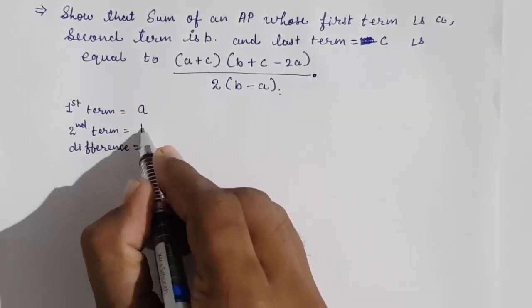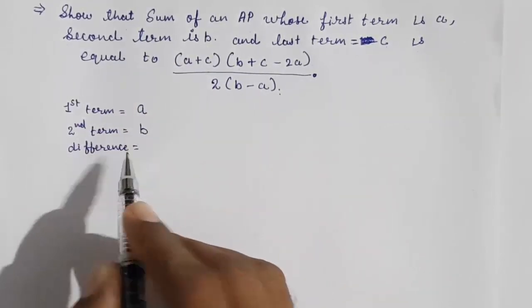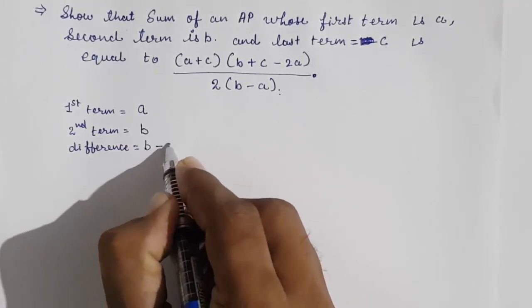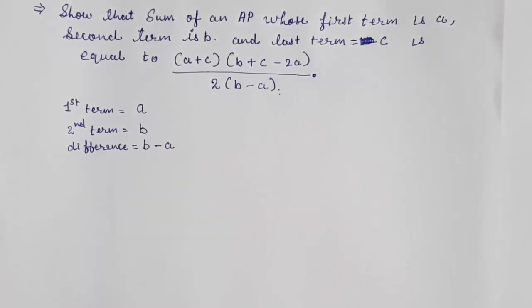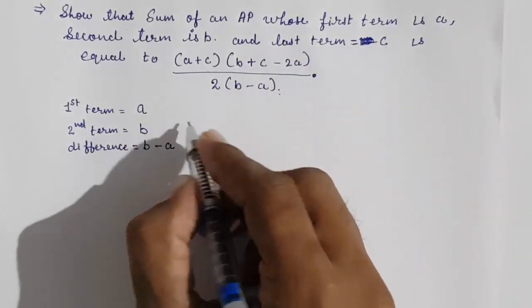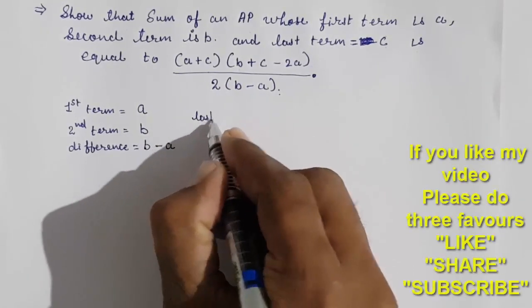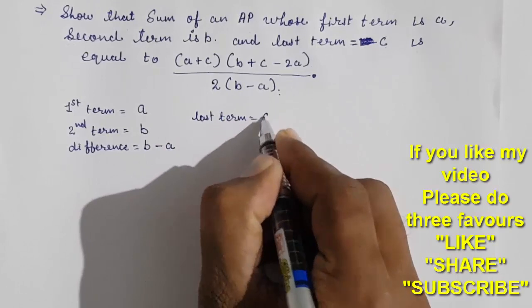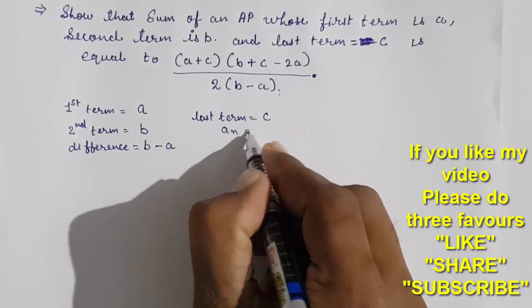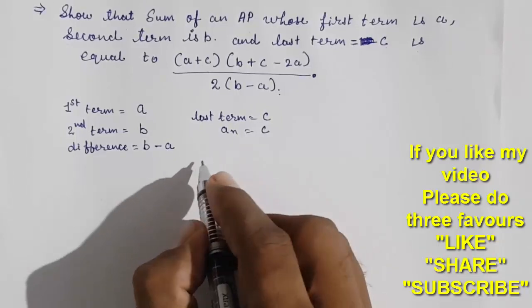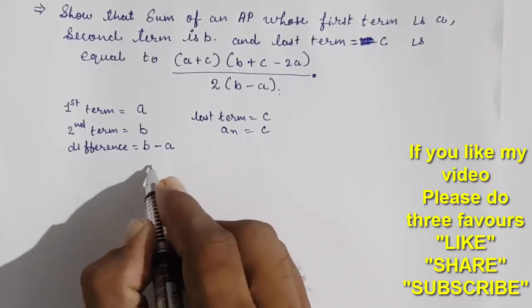The first term is a, and the second term is b. The common difference can be found as b minus a. Is this clear? Now moving towards the formula — we are having the last term as c, so the last term aₙ equals c. Both are the same.